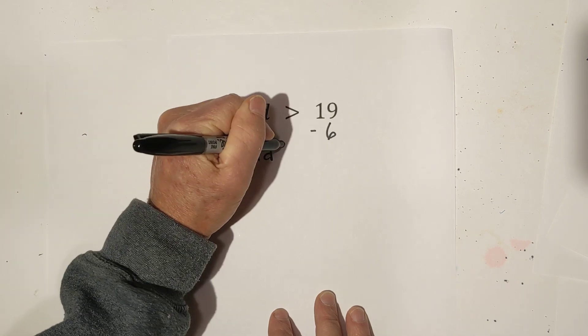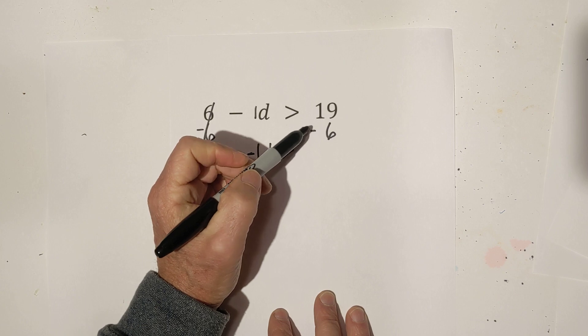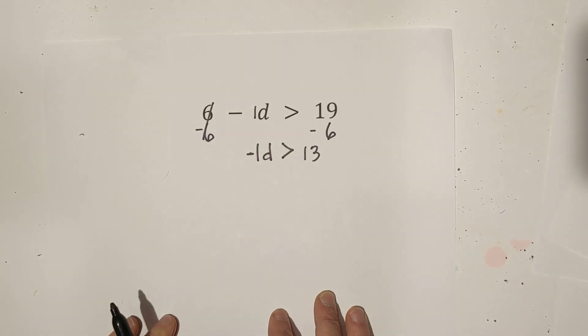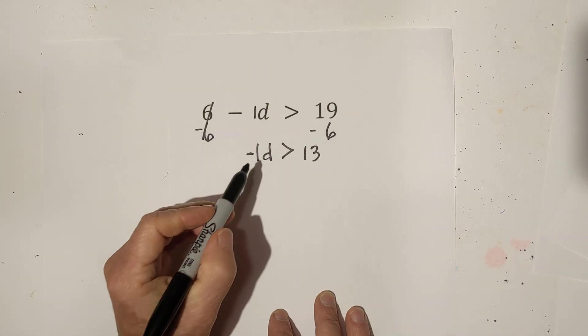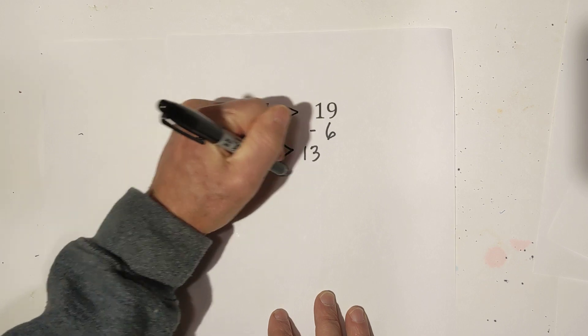Negative 1d is greater than 19 minus 6 is 13 because 19 is larger than negative 6. Keep the sign of the larger number. Now to undo the multiplication we're going to divide each side by negative 1.